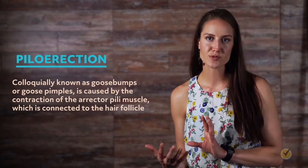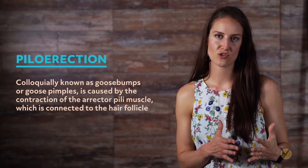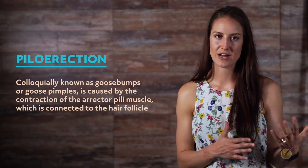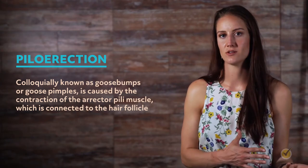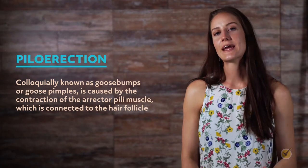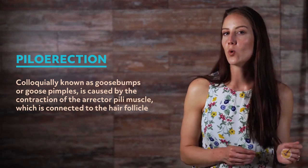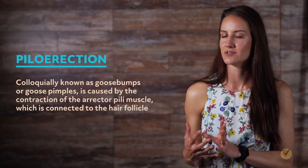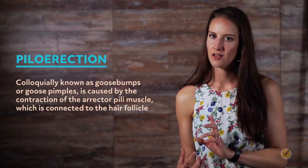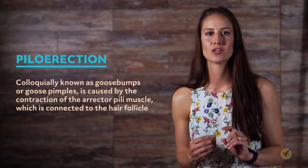Piloerection, colloquially known as goose bumps or goose pimples, is caused by the contraction of the erector pili muscle, which is connected to the hair follicle. Upright hairs have the potential to trap warm air close to the skin and preserve heat, although this effect is minimal in humans with sparse body hair.